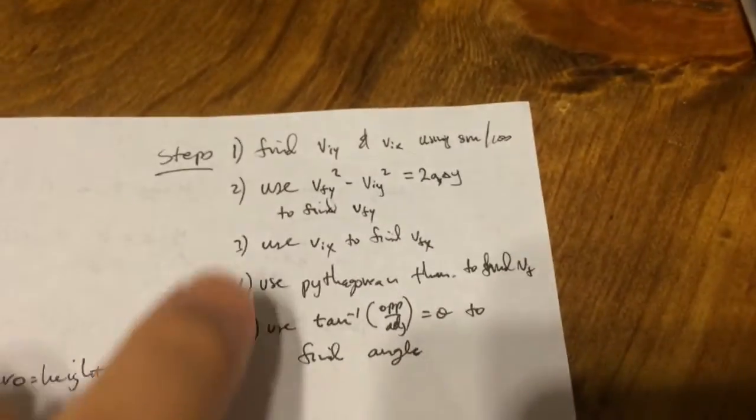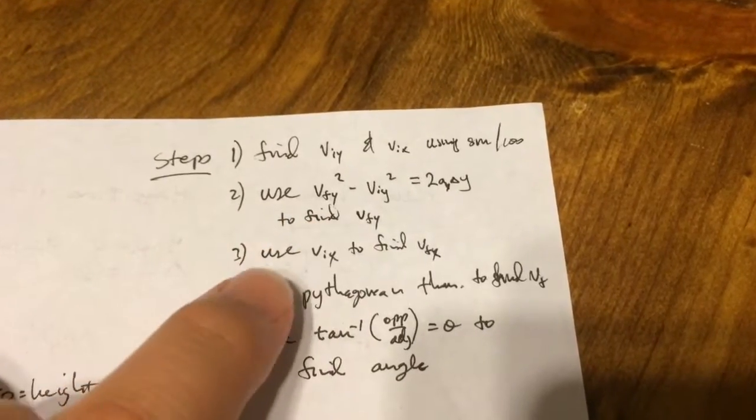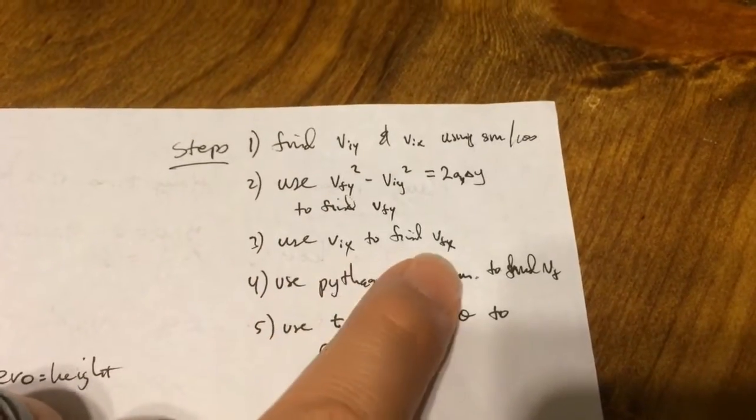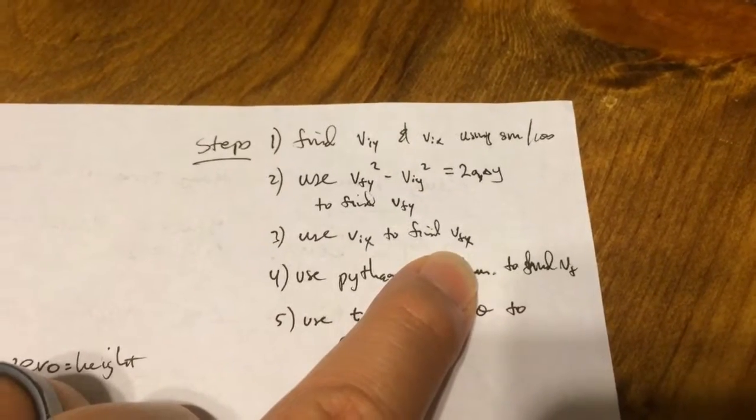All right, fixed. So we use this equation to find v final y. We use this relationship to find v final in the x because remember, x is constant.